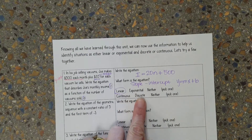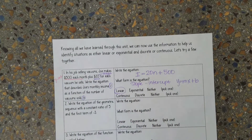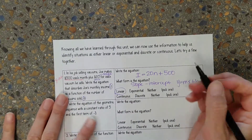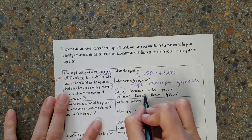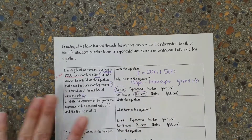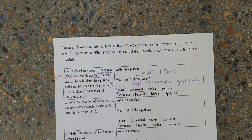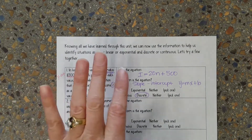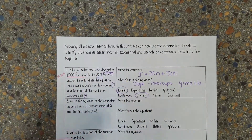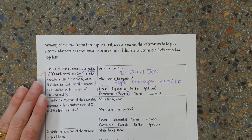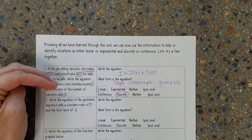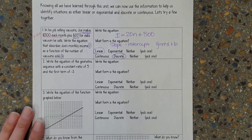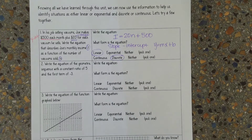Is this continuous, discrete, or neither? Well, can he sell half of a vacuum? He can't, so it's not continuous — it's going to be discrete. If you're not sure how I got that, pause it right here and come ask me. I don't want you guys moving on until you understand this one.